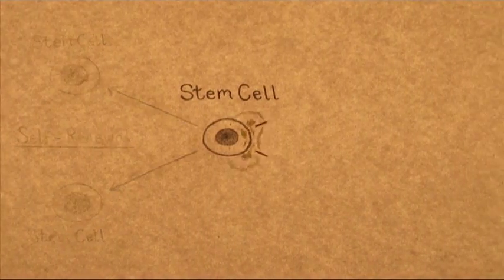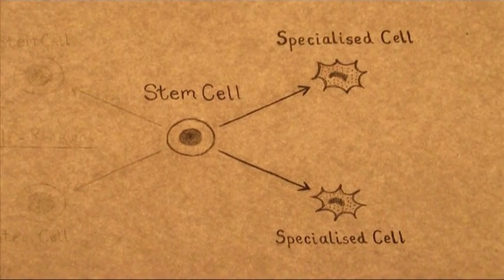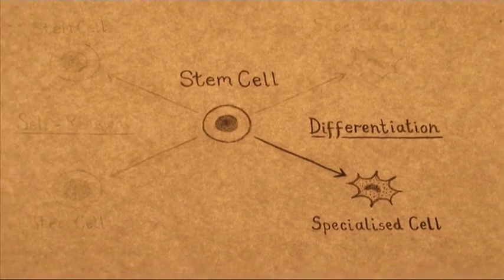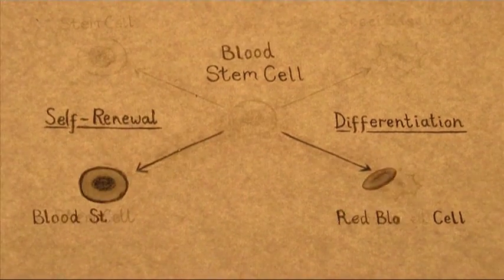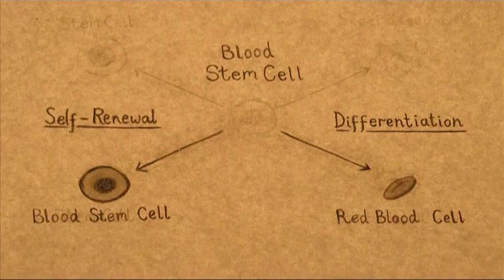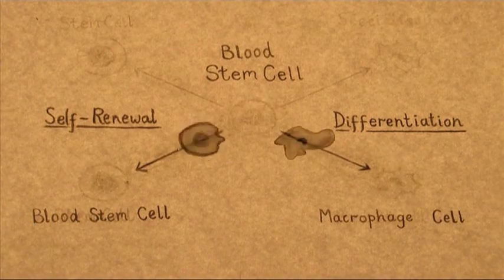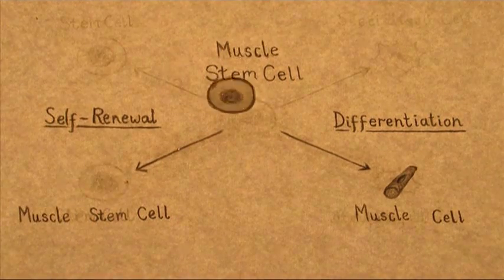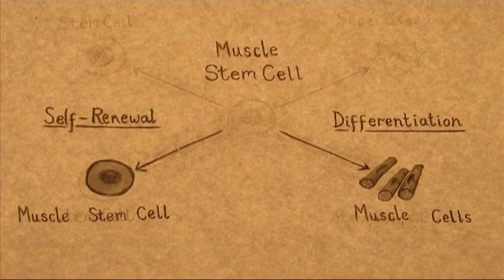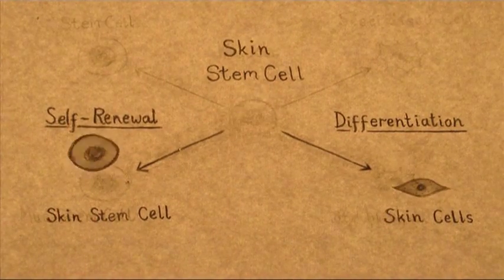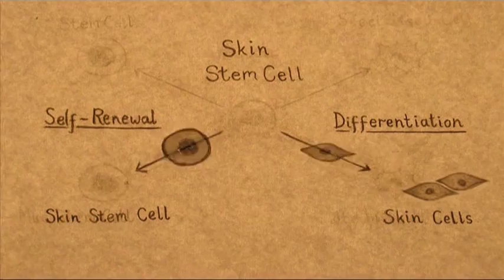So the stem cell has to make a decision every time it divides. It produces two daughter cells and those daughter cells can be new stem cells or they can be specialised cells. Stem cells in the adult tissues can normally only make the type of cell in that tissue. So a stem cell in the skin can make cells of the skin, but it can't make blood cells and vice versa.